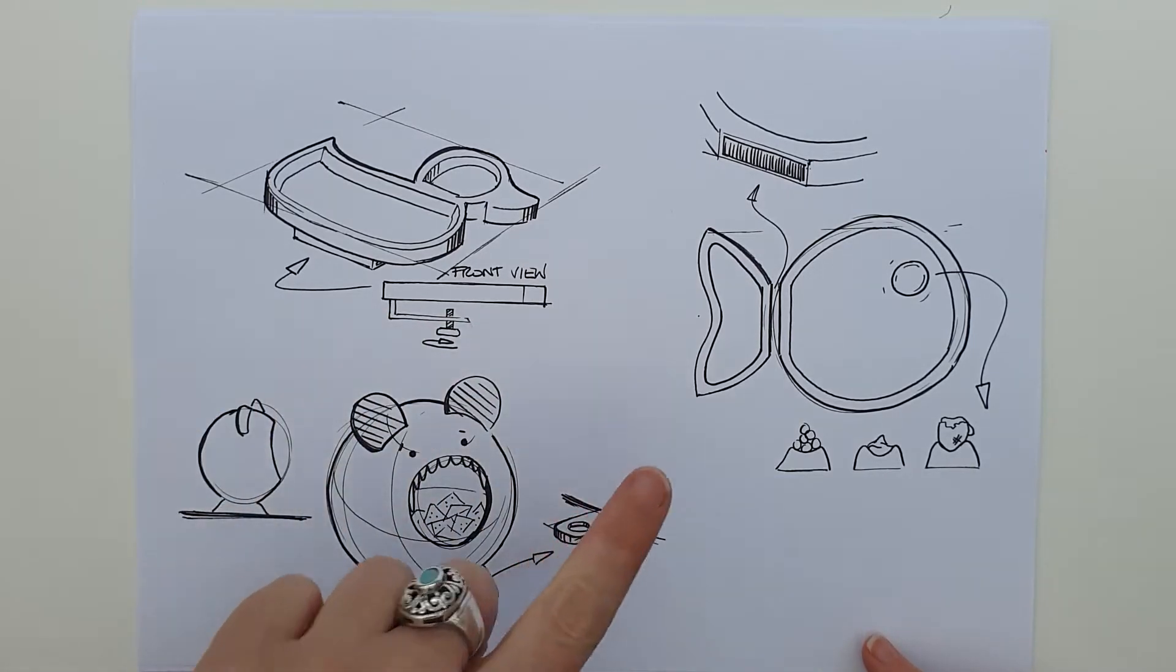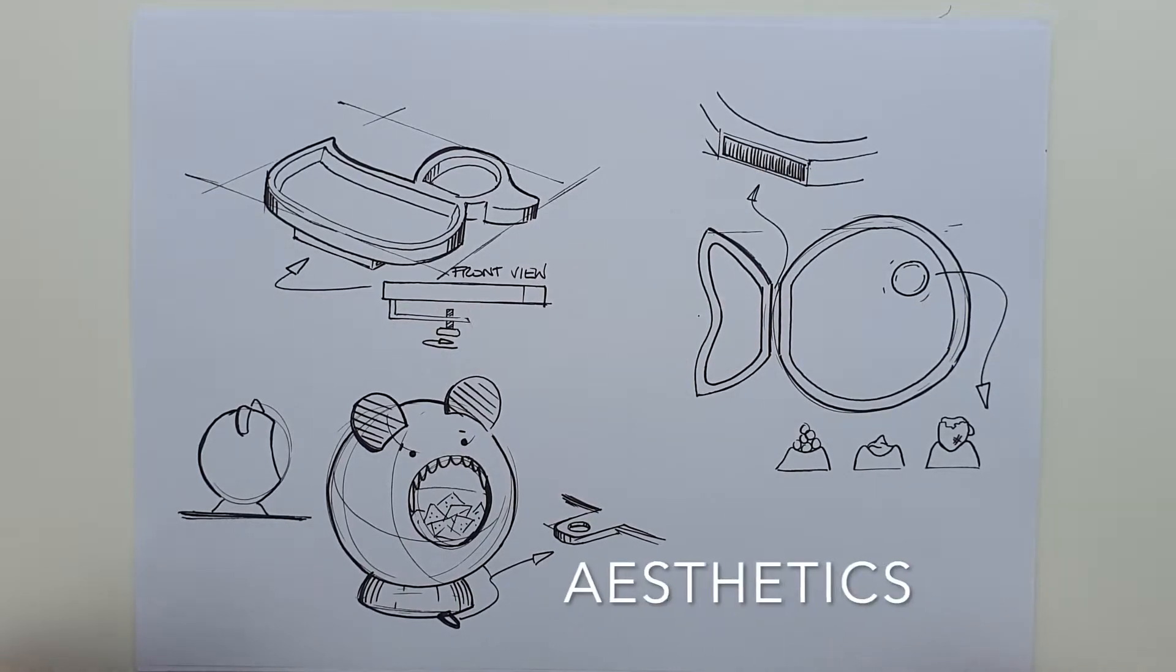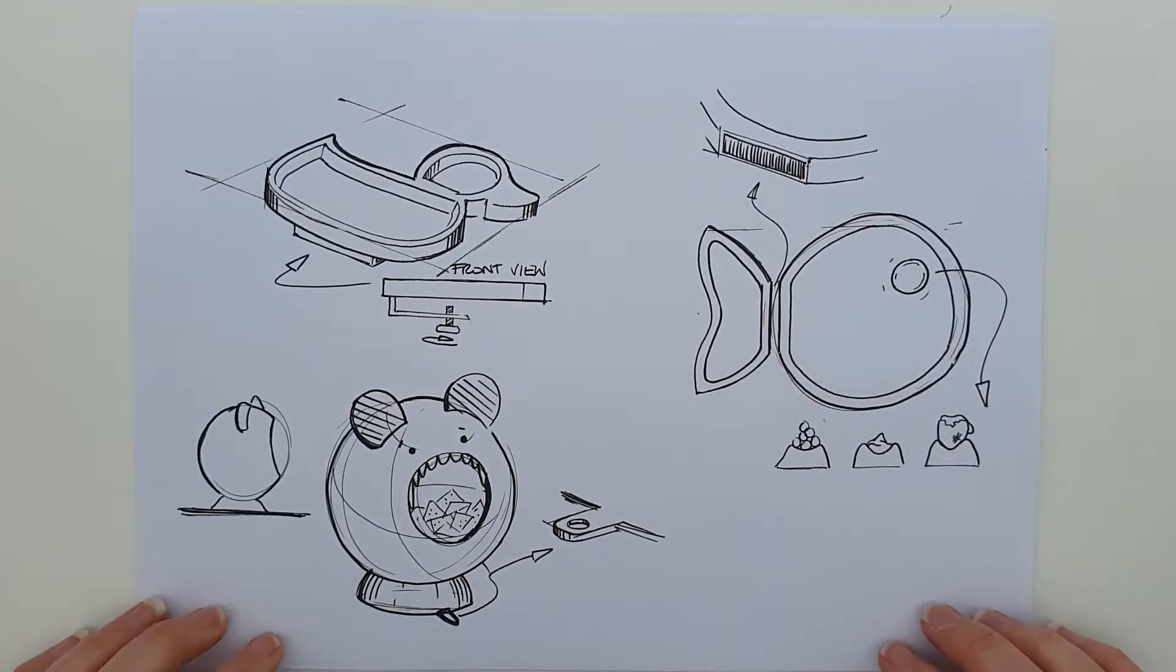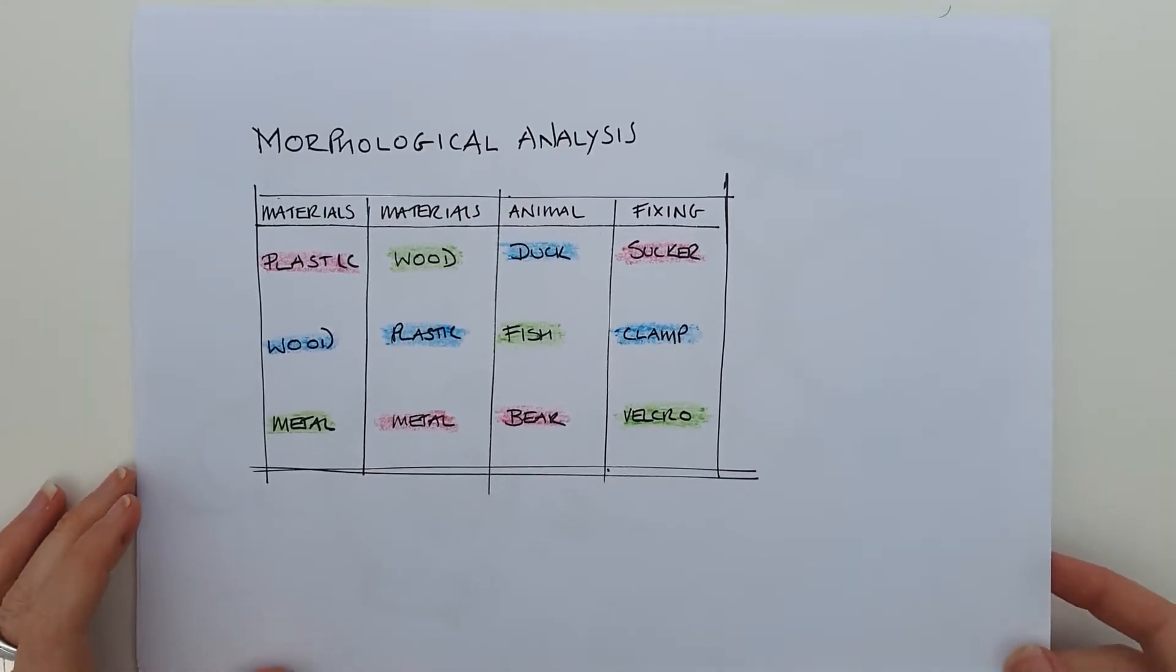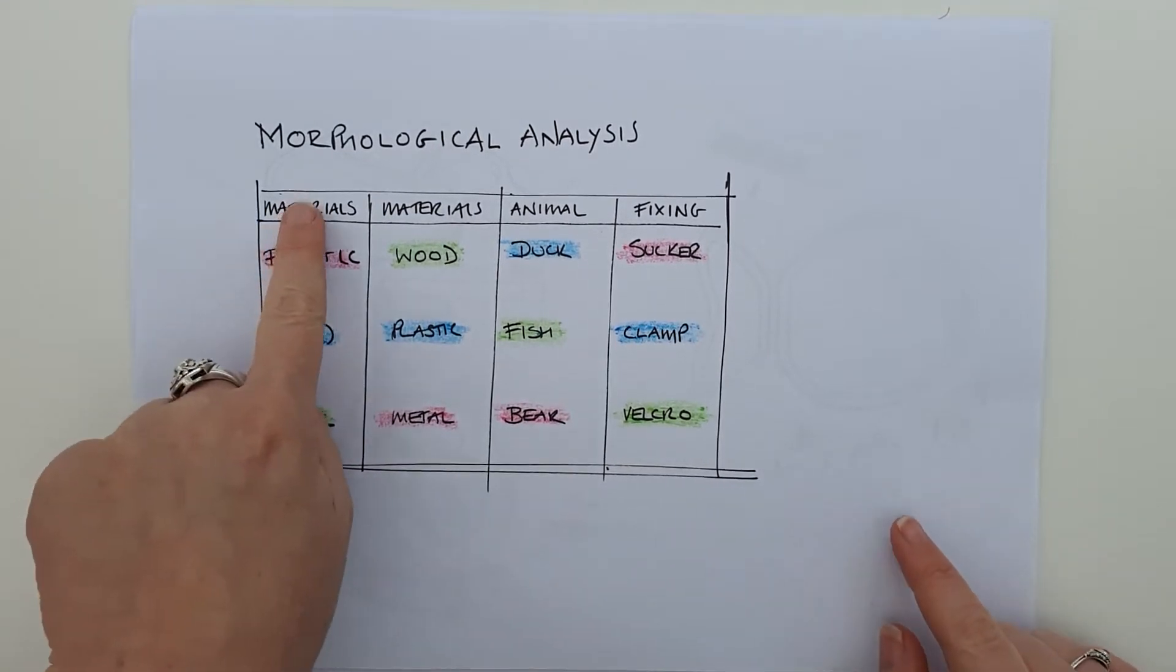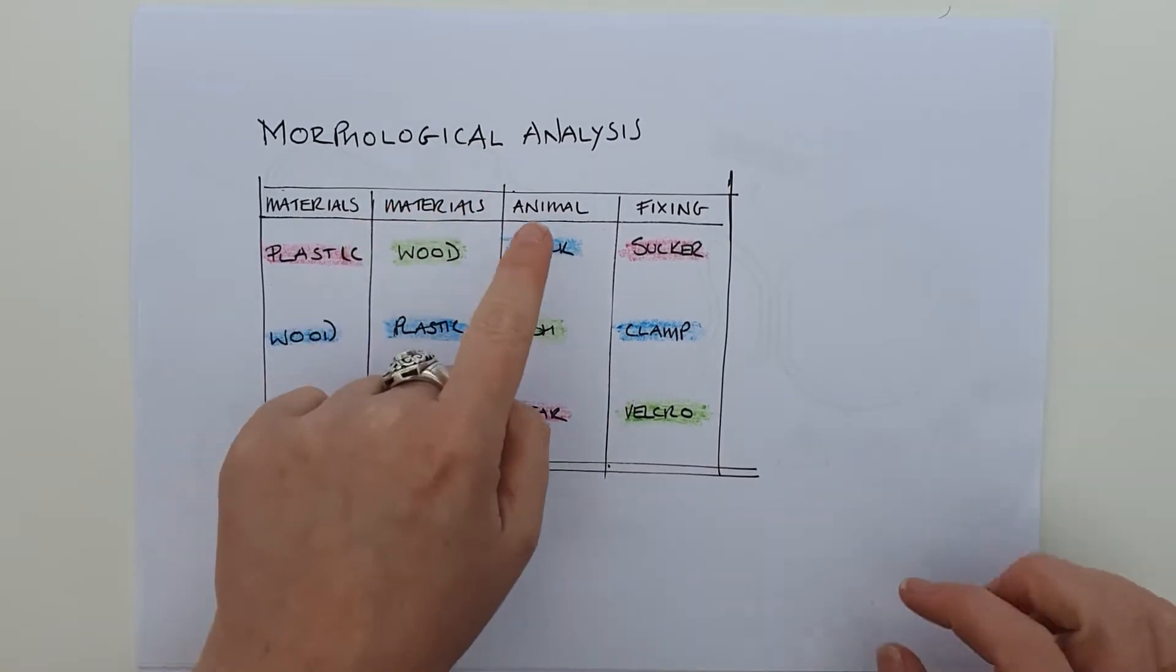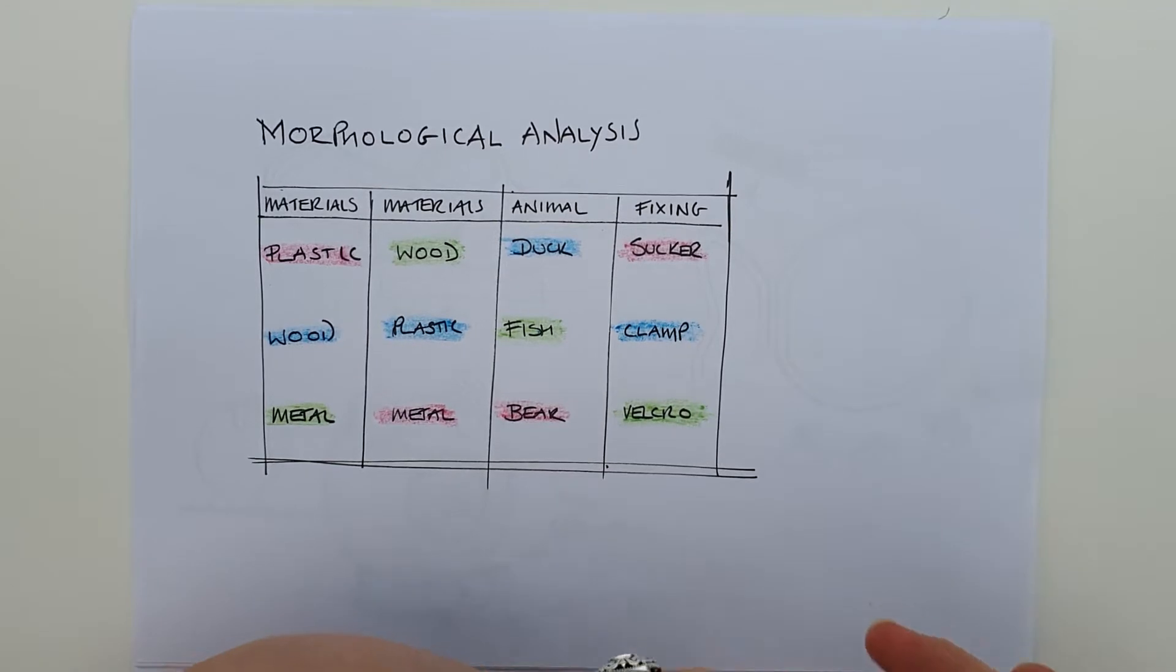To do this, we use the design factors. The four we're going to focus on today are function, aesthetics, ergonomics, and materials. You'll notice I've used the task from last week - the toddler baby plate. I asked you to pick one, two, or three idea generation techniques, so I chose morphological analysis. I've got two columns here, both materials, so I can have some combinations of materials.